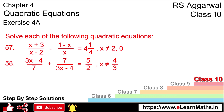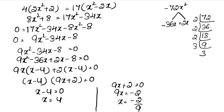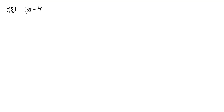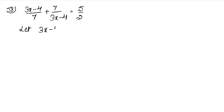Now let's do question number 58: (3x−4)/7 + 7/(3x−4) = 5/2, where x ≠ 4/3. Notice that the numerator of the first fraction is the denominator of the second fraction and vice versa. For this type of question, we use a substitution trick: let a = (3x−4)/7.